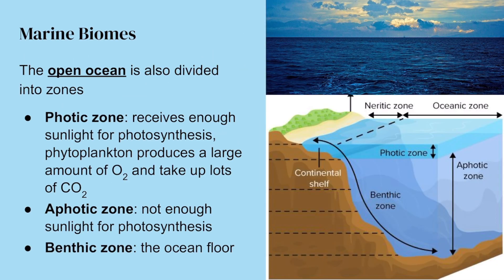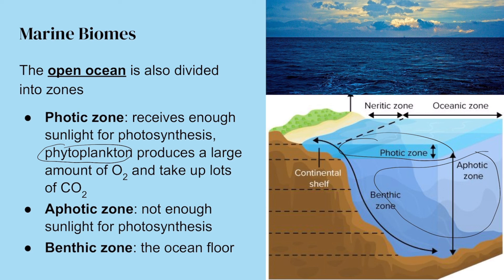Our last marine biome is the open ocean, also divided into zones. The photic zone is the area that receives enough sunlight for photosynthesis — primarily phytoplankton producing oxygen by performing photosynthesis, forming the basis of oceanic food webs. The aphotic zone is the area that does not receive sunlight, so no photosynthesis occurs and there's much less oxygen. Then at the very bottom, similar to a lake, the benthic zone is the ocean floor — the sediments and sand at the bottom of the ocean.